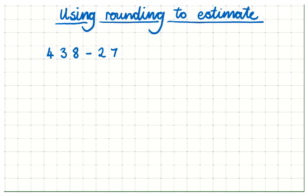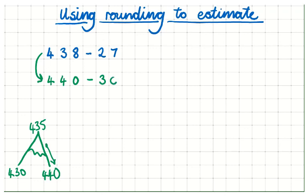So, we're going to round them to estimate what our answer is going to be. And I'm going to round them to the nearest 10. So, 438 rounded to the nearest 10. So, what 10 is nearest to 438? If I wanted to very quickly do this, I'd have 430 here. I'd have 440 here. 435 in the middle and it would be here. So, it would round to 440. And then 27 would round to 30.